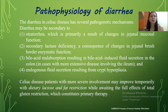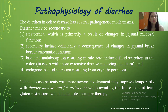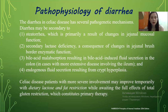Pathophysiology of diarrhea. Celiac disease has several pathogenetic mechanisms for diarrhea. Diarrhea may be secondary to: first, steatorrhea, which is primarily a result of changed jejunal mucosal function; second, secondary lactase deficiency as a consequence of changed jejunal brush border enzymatic function; third, bile acid malabsorption resulting in bile acid-induced fluid secretion in the colon; and fourth, endogenous fluid secretion resulting from crypt hyperplasia. Celiac disease patients with more severe involvement may improve temporarily with dietary lactose and fat restriction while awaiting the full effect of total gluten restriction, which remains the primary therapy.